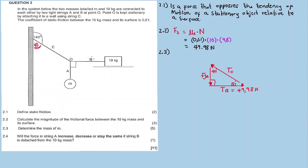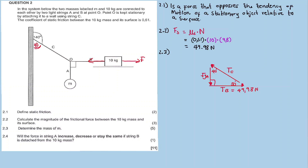From the free body diagram of the 10 kg mass: since the object is not moving, the net force equals zero. The horizontal vectors sum to zero, so the static friction equals the tension. Therefore tension B equals 49.98 Newtons. Now we need FGA, the weight of mass M. Since this is a right-angle triangle, we can apply trigonometric ratios to calculate FGA.